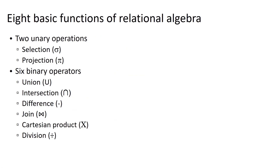Now that we've seen how to represent relations and attributes using relational algebra notation, we'll talk about the eight basic relational algebra operations. Two are unary — selection and projection — meaning they impact only one relation. Six are binary, meaning they interact with two relations at a time. Three of those are the set theory operations of union, intersection, and difference. We also have join with its sub-operations of inner and outer joins, plus Cartesian product and division. Right now we'll cover union, intersection, difference, and join, and return to Cartesian product and division later.